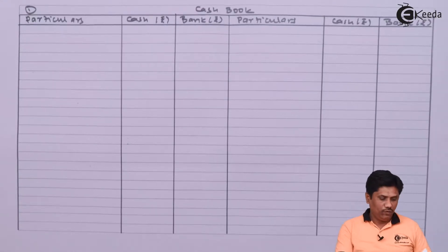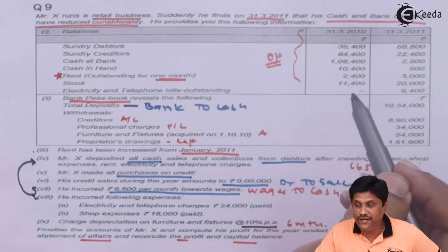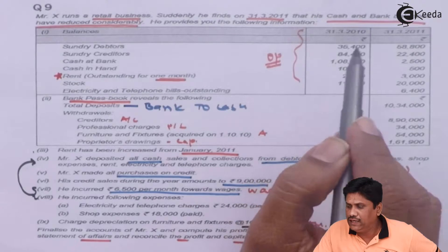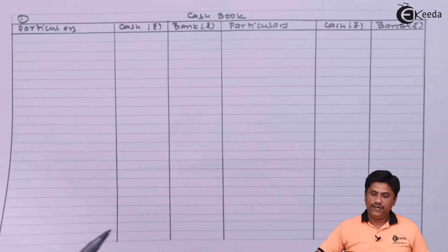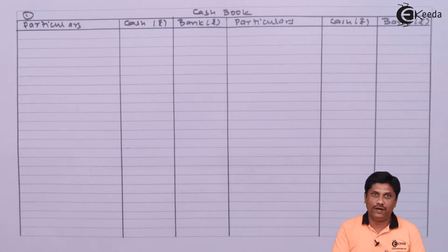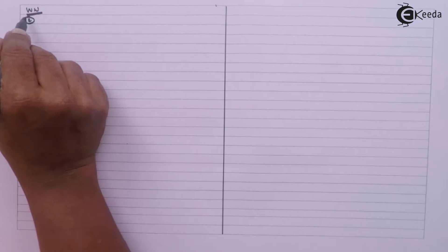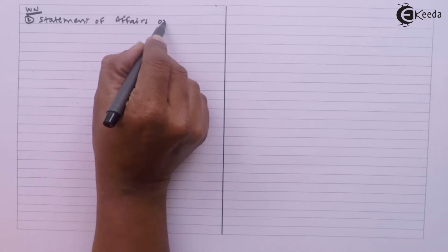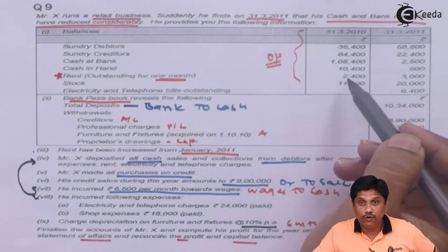Students, I am writing the opening balances first. They have given you opening balances which I will enter in my opening statement of affairs on 31st March 2010, which is 1st April 2010. This is working note number 2, because working note number 1 is kept for the cash book, which is an essential part of our presentation. So working note number 2 we are preparing. All these balances I am noting in my opening statement of affairs.